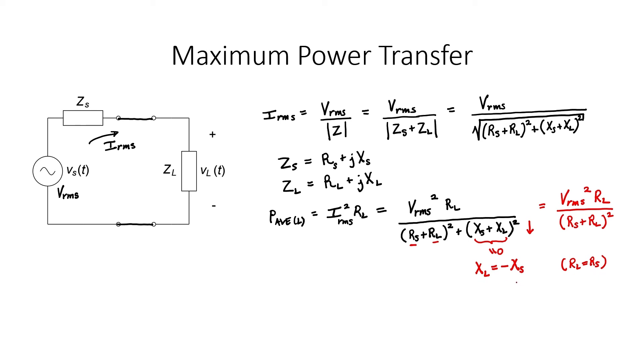Because the real parts need to be equal to achieve maximum power transfer, but the imaginary parts should be additive inverses of one another, we effectively can say that the impedances should be complex conjugates. So if you have a reactive circuit or a circuit with complex numbers for the source and the load, then the way to achieve maximum power transfer is that the load should be the complex conjugate of the source.